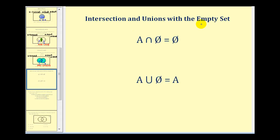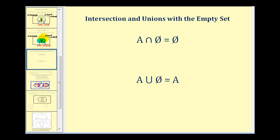A couple things to mention about the empty set: any set A intersected with the empty set will equal the empty set, and the union of any set A and the empty set will always be set A. We'll stop here for part one and take a look at some additional examples in part two.